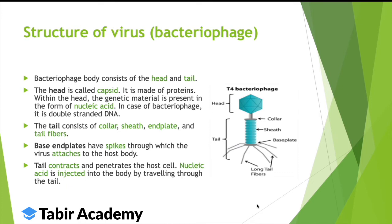You can think of its overall structure as like a spider. The head has the nucleic acid — the genetic information. Then you have the collar, like a collar on a shirt. After that is the main body — the tail sheath. Then the tail fibers are attached at the end.